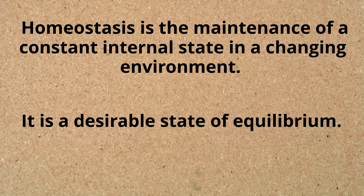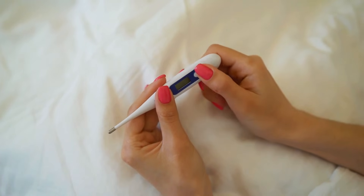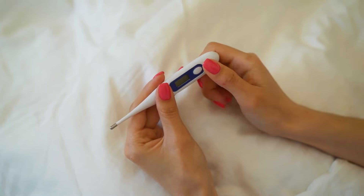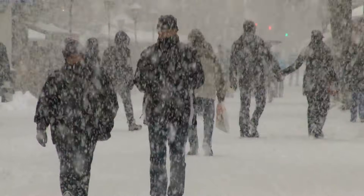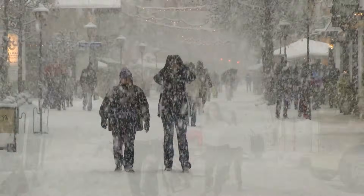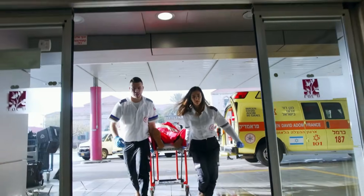In order to help you understand homeostasis, let's take a look at a couple of examples. Healthy individuals maintain a temperature around 98.6 degrees Fahrenheit. If it is hot outside, your body cools itself, and if it's cold outside, it will still maintain this temperature. If it's not able to maintain this internal temperature of 98.6 or roughly thereabouts, bad things can happen.